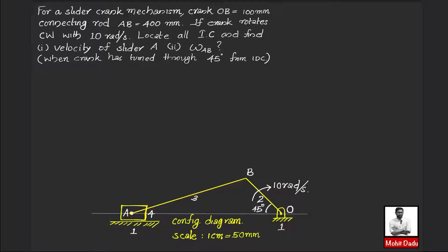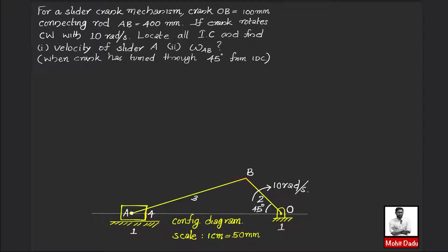Based on the given details, we will first construct the configuration diagram drawn to a scale of 1 cm = 50 mm. First draw a horizontal line representing the line of motion. At 45 degrees from that, draw the crank — since the crank is 100 mm, it is represented by a 2 cm line. Then, using a compass with a radius of 8 cm (equivalent to 400 mm), mark point A on the line of motion. This completes the configuration diagram where the connecting rod and slider make contact at point A.